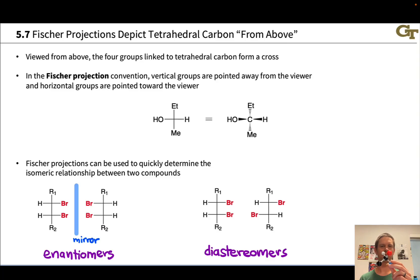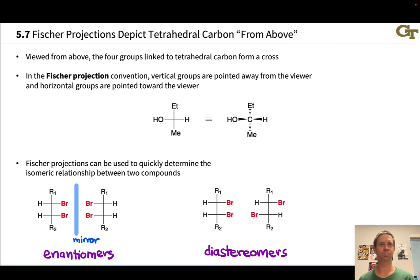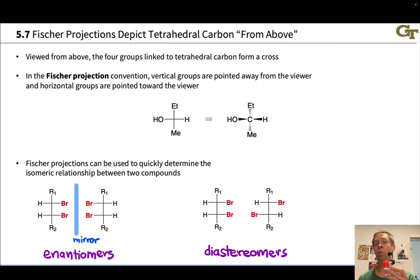If we think about looking at a tetrahedral carbon atom from above, we'll realize that what we see is actually a cross, something that looks almost square planar if you don't think too much about the three-dimensionality. This is the basis of a way of representing tetrahedral carbon known as the Fischer projection. It's a bit of an old-school approach prior to the ability to easily draw and print wedges and dashes, but it's a reliable way to represent tetrahedral carbon even when we need to specify three-dimensional information, for example at stereocenters or for chiral compounds.